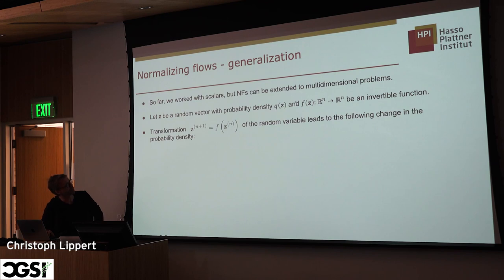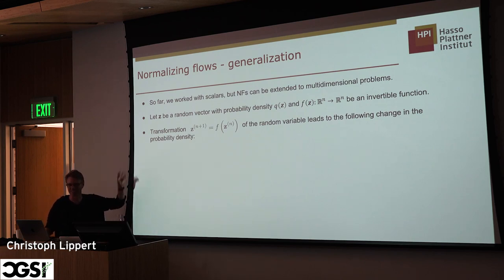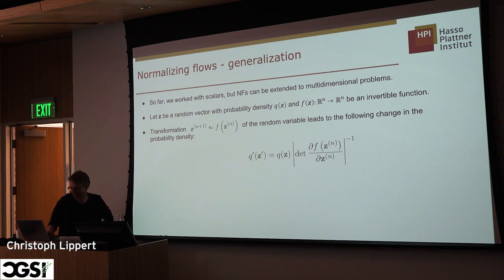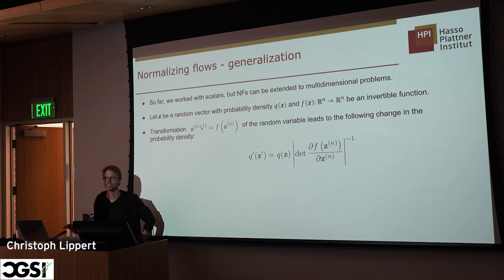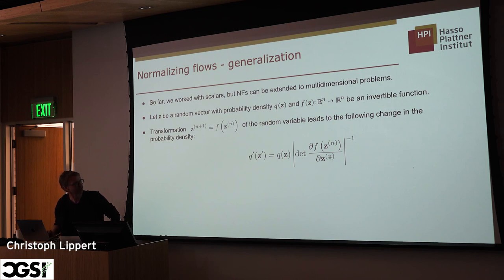Applying f to Z gives us Z_{n+1} — a transformation of the original random variable. We again need to follow the change of variable in the probability density. Instead of the absolute value of the derivative, we now have the absolute value of the determinant of the so-called Jacobian matrix. The Jacobian of a function from R^n to R^n is a matrix containing all the partial derivatives — how does the i-th input change into the i-th output — giving an n×n matrix.